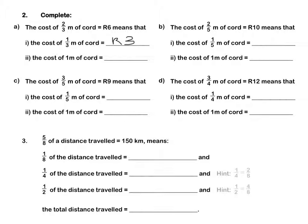If one third of a metre is 3 rand, then a full metre of rope will be 9 rand. We multiply by 3 because there are three thirds in one whole, so we multiply our cost by 3. Pause this video to complete Question 2 by yourself.